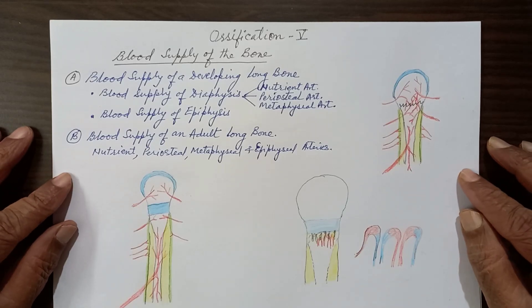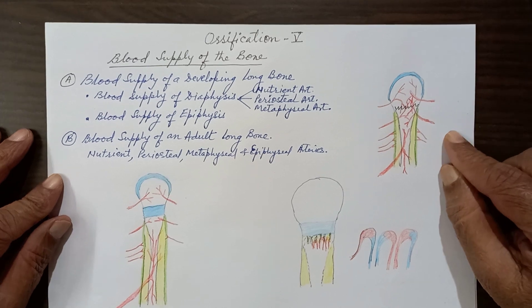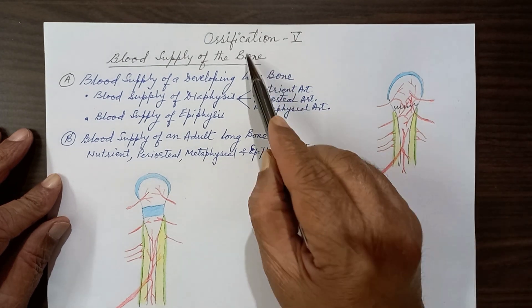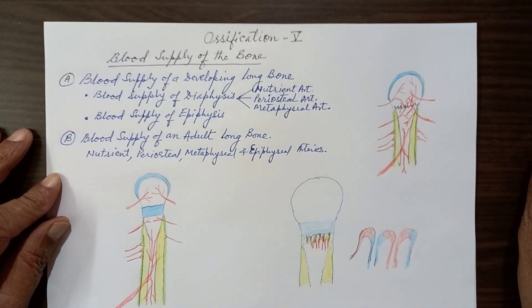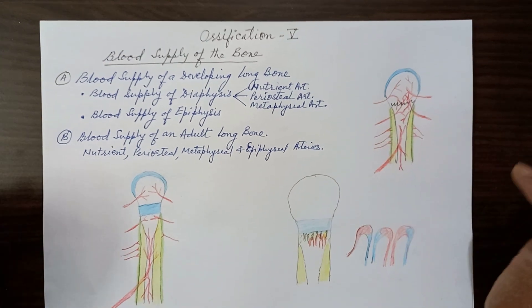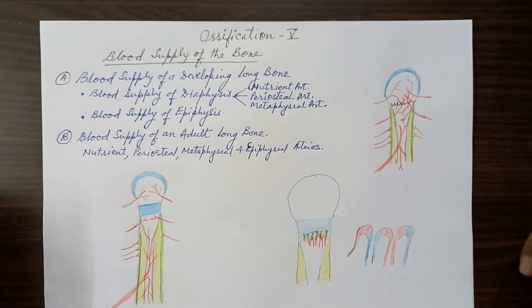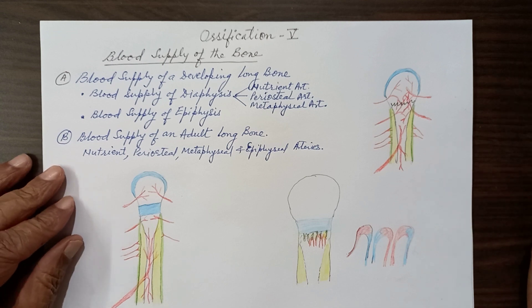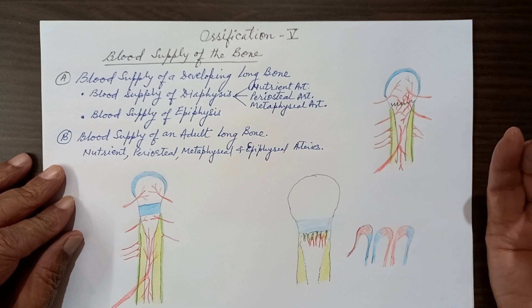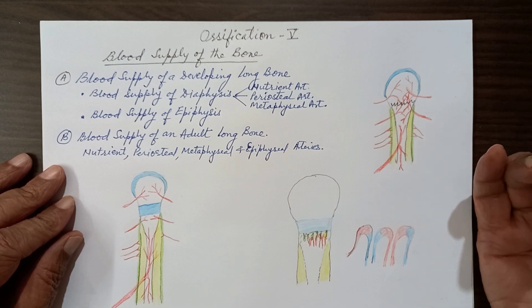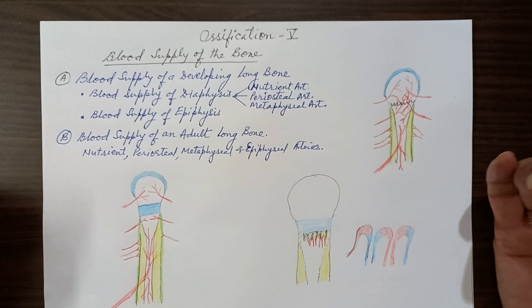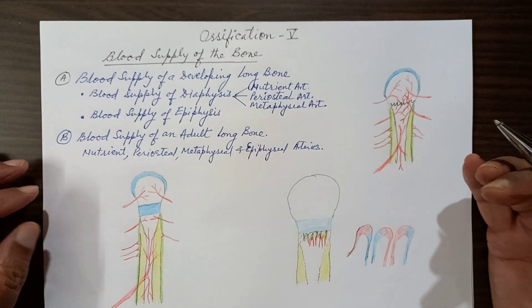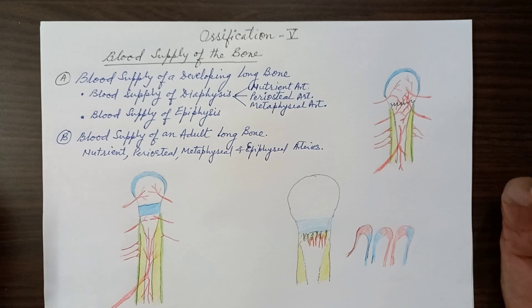Good evening students. This is the fifth video for the ossification of bone, and it is the last one. It deals with the blood supply of a developing bone. After understanding the blood supply of a developing bone, we will also compare it with the blood supply of an adult long bone.